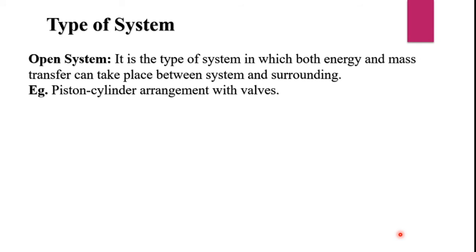The next is types of system. The first one is open system: a system in which both energy and mass transfer can take place between the system and surrounding. The example is a piston-cylinder arrangement in which a cylinder is taken with a piston fixed above and a valve at the bottom. When the piston moves up and down with some force, energy is transferred, and with the help of the valve, mass can also be transferred. That makes it an example of an open system.